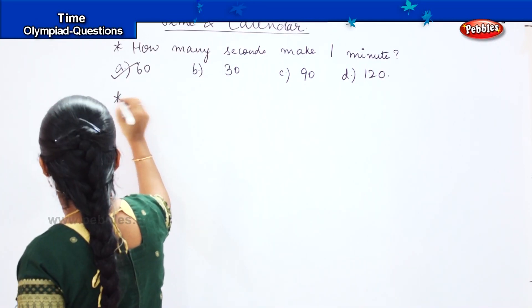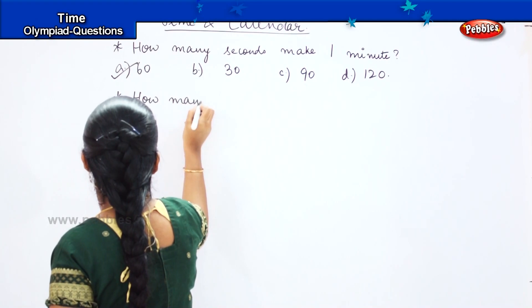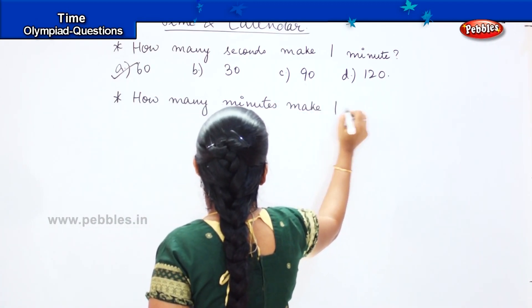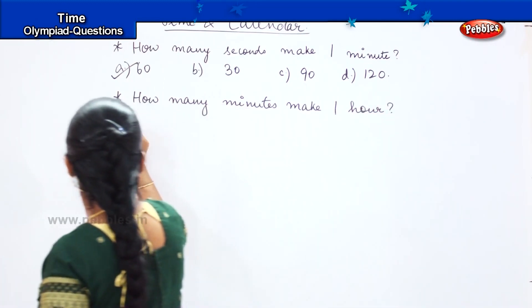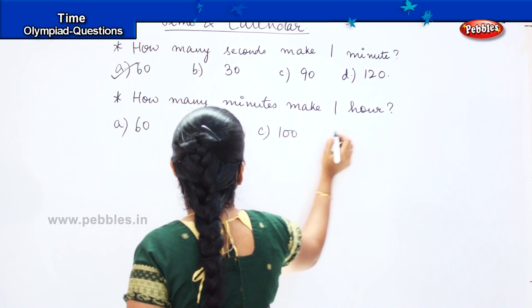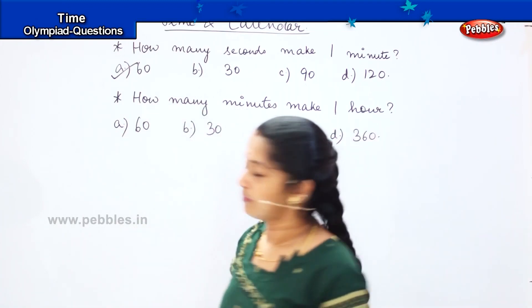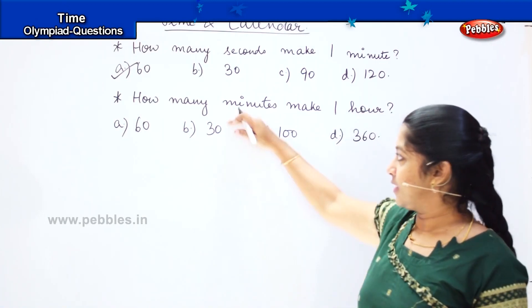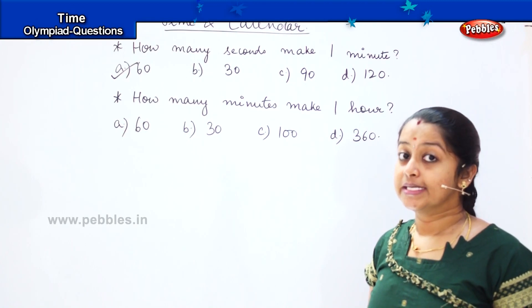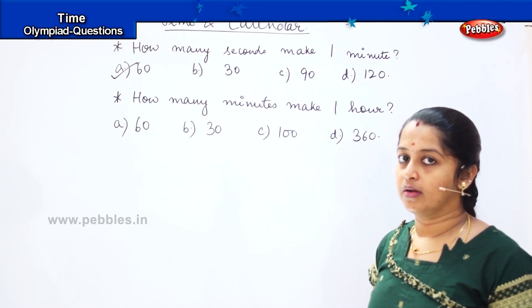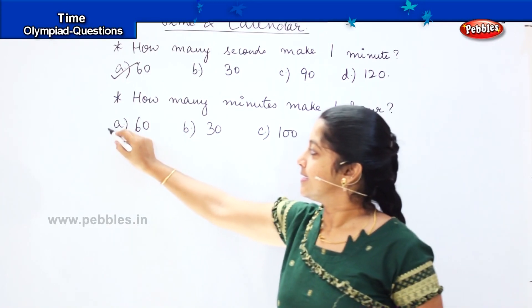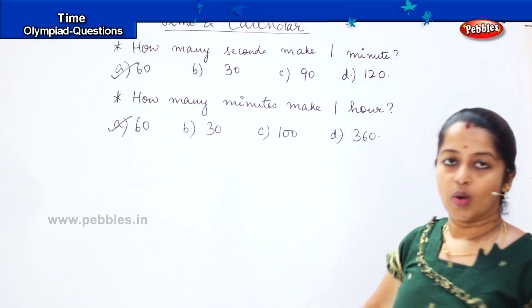Your next question is: how many minutes make one hour? Your options are A) 60, B) 30, C) 100, and D) 360. So what was the thing I told you earlier? Yes — 60 seconds make one minute and 60 minutes make one hour. So the answer is 60 minutes make one hour.